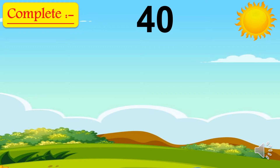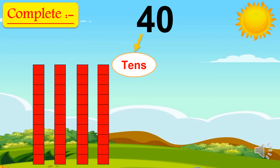Next, we have number forty. Four is in the tens place, so we have four sticks. Zero is in the ones place, so there are no small squares — because zero is in ones.